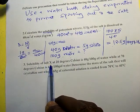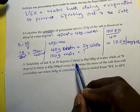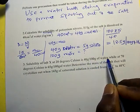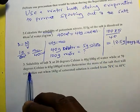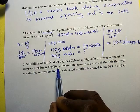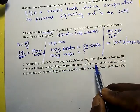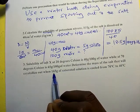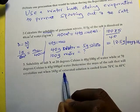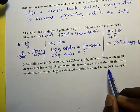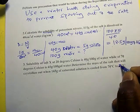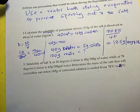Solubility of salt X at 20 degrees Celsius is 40 grams per 100 grams of water, while at 70 degrees Celsius is 65 grams per 100 grams. Determine the mass of the salt that will crystallize out when 165 grams of saturated solution is cooled from 70 to 20 degrees Celsius.